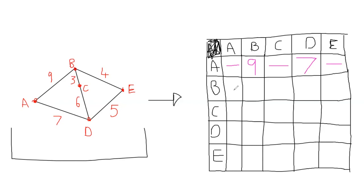You go down and do this for the whole table. From A to B again, the same as the top row, there would be nine. From B to B there is no weight, so we put zero. From B to C there is a weight of three. From D to B there is no direct edge because C breaks that edge, so we put zero. And from B to E there is a direct edge, so we put four.